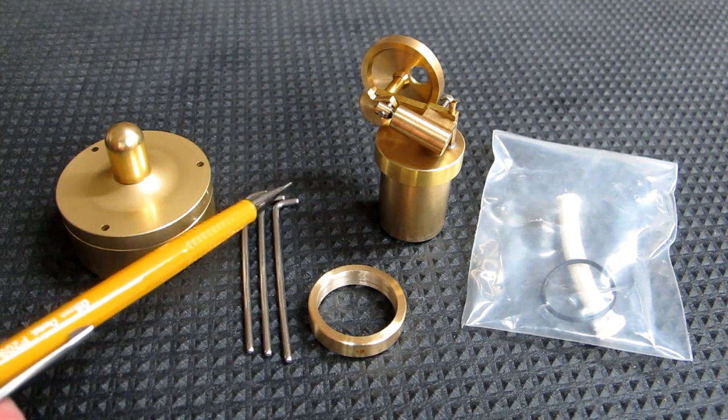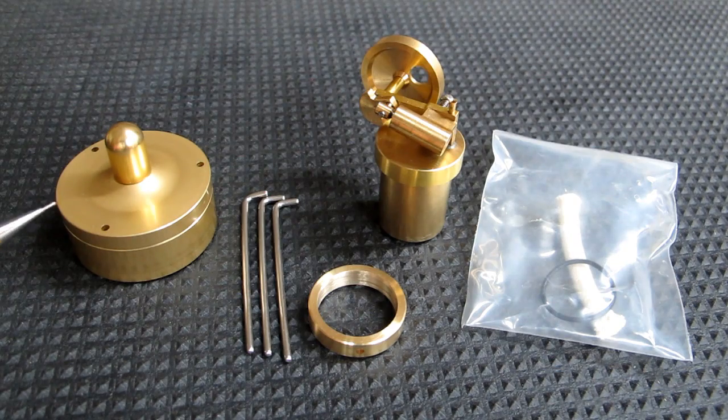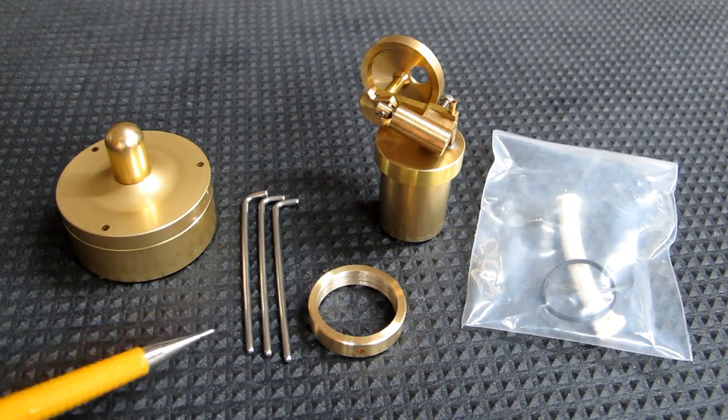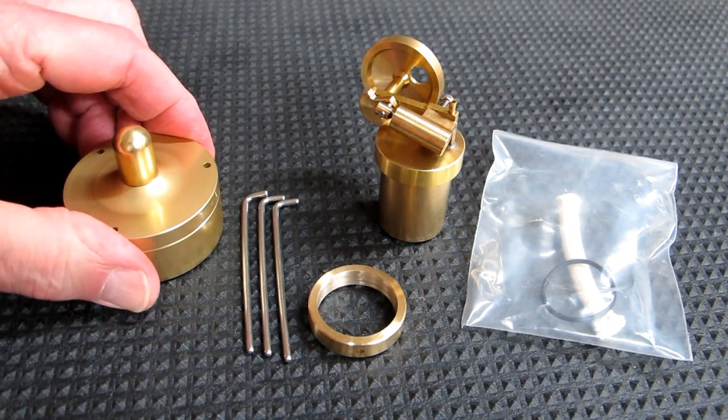This is the tray which fits at the top of these three pillars, and the alcohol burner which is also the base for the steam engine. The three pillars fit in here. This becomes a very stable base.